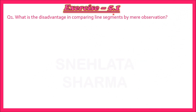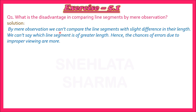Exercise 5.1 Question No.1: What is the disadvantage in comparing line segments by mere observation? Is question mein humein batana hai - do line segments ko agar sirf hum observe karke compare karte hain to uski kya disadvantage ho sakti hai? Solution: By mere observation we can't compare the line segments with slight difference in their length. We can't say which line segment is of greater length, hence the chances of errors due to improper viewing are more.